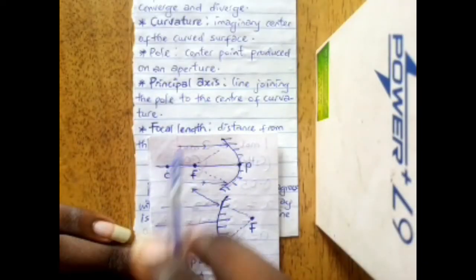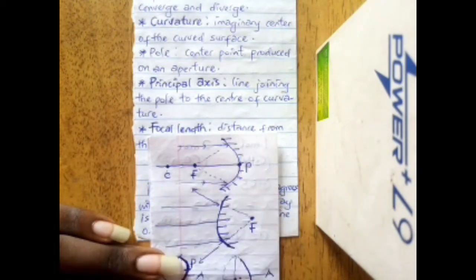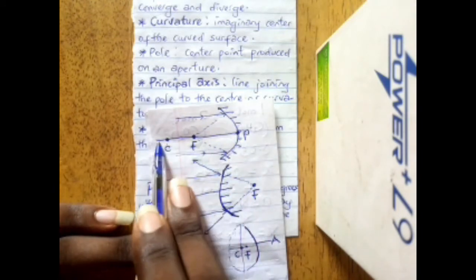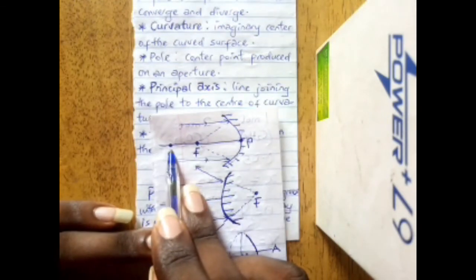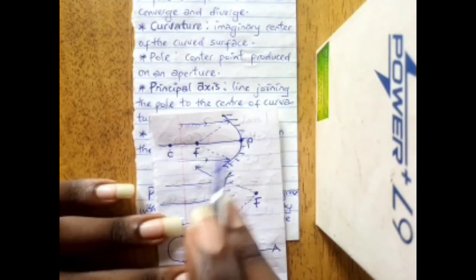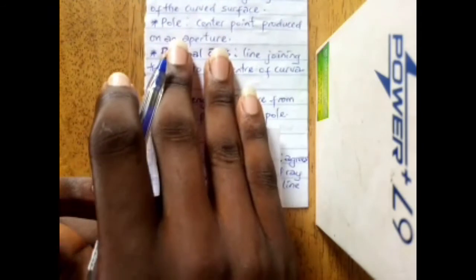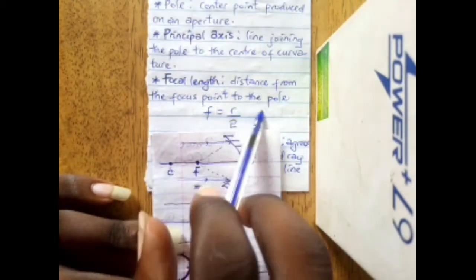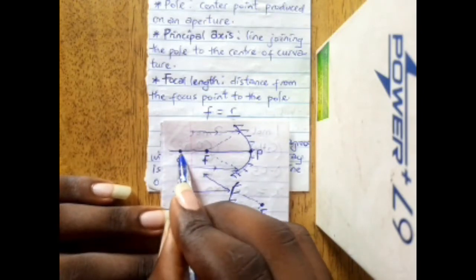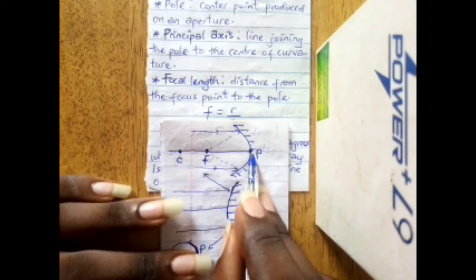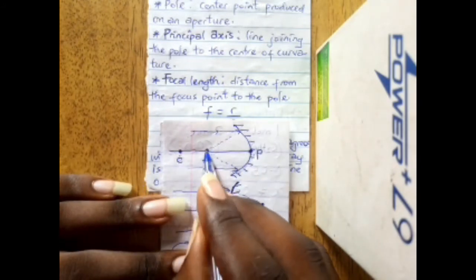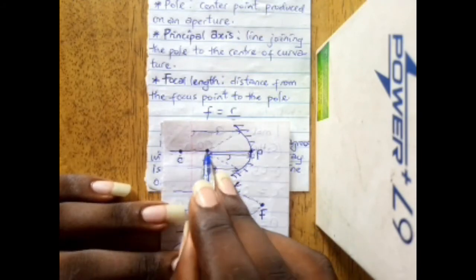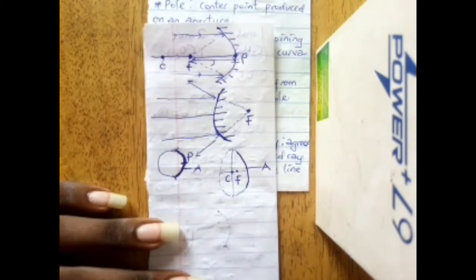The principal axis is the line joining the center of curvature, passing through the focus, to the pole. Lastly we have focal length — the distance from the focus point to the pole. The distance from the center of curvature to the pole covers the principal axis, and the focal length is the distance from the focus to the pole.